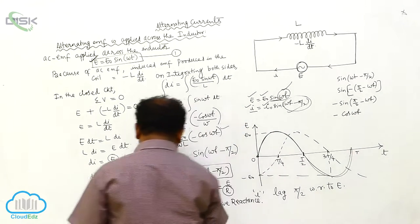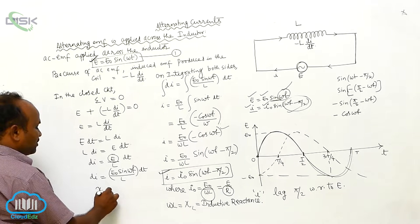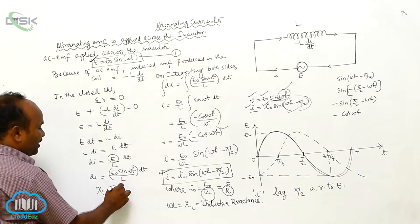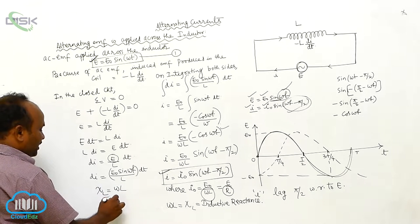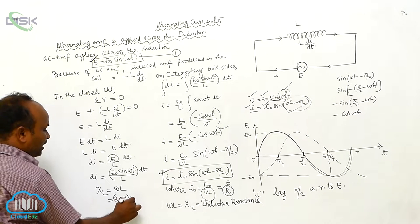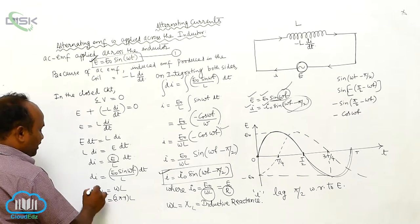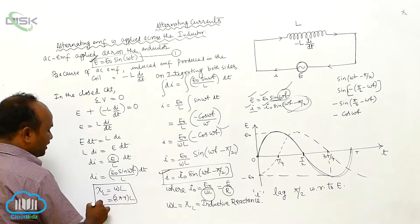Let us consider XL. XL is equal to ωL, which equals 2π × ν × L. Therefore, this is called XL.